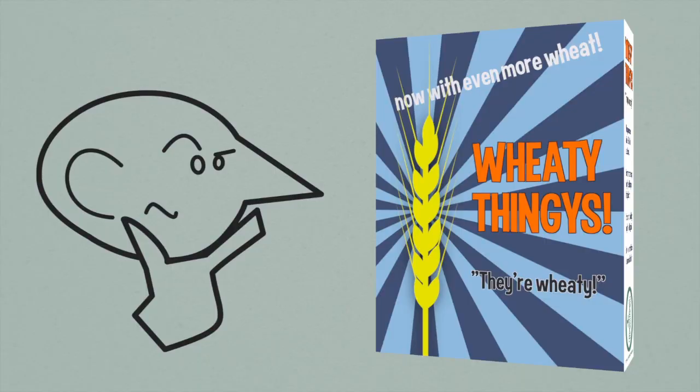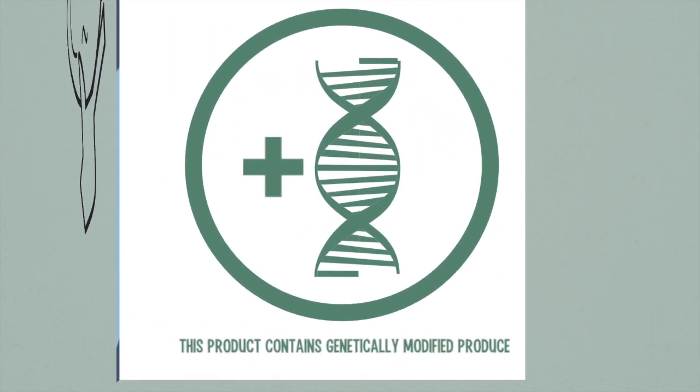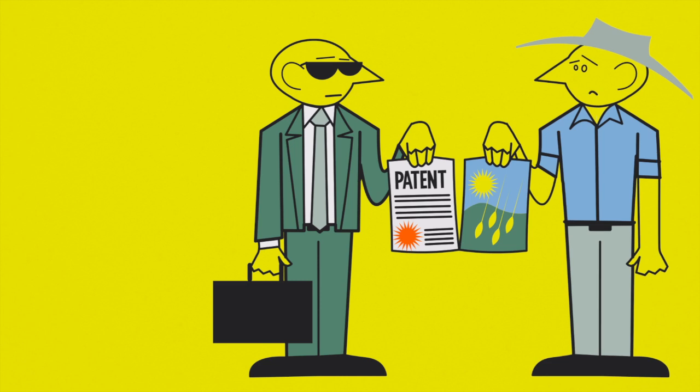Many consumers view GM with suspicion. Some transparency might just change that position. For example, labelling might be a big pain, but consumer choice is a reasonable claim.